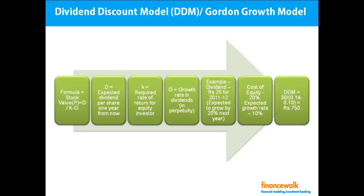In DDM we need to know three aspects: D — the expected dividend — K — the required rate of return — and G — the growth rate. Here the expected growth rate in dividends is 10 percent forever, so 0.10. Therefore 30 divided by (0.14 minus 0.10) equals rupees 750. That was about the Dividend Discount Model.